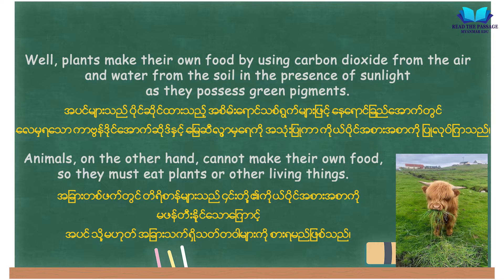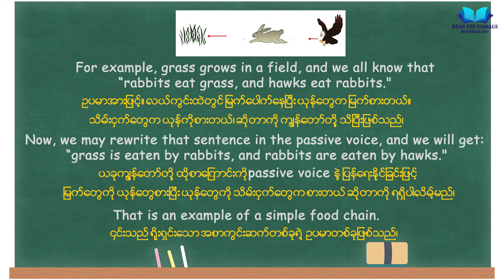Animals, on the other hand, cannot make their own food, so they must eat plants or other living things. For example, grass grows in a field, and we all know that rabbits eat grass and hawks eat rabbits. We may rewrite that sentence in the passive voice and get: grass is eaten by rabbits, and rabbits are eaten by hawks. That is an example of a simple food chain.